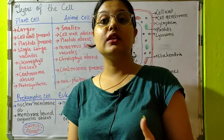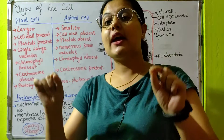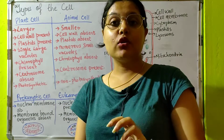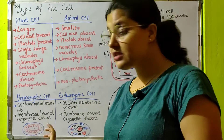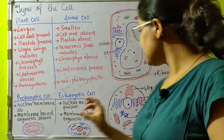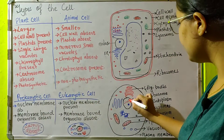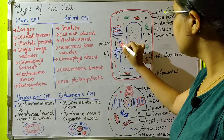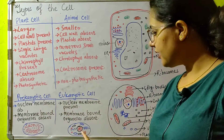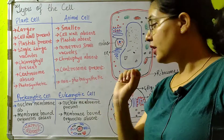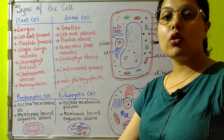We learned about prokaryotic and eukaryotic cells in the nuclear part when we studied the nucleus. When a cell does not have a nuclear membrane, the genetic material present inside the cell is scattered all around the cell. You can see here — the genetic material inside is scattered all around, but in a eukaryotic cell it is concentrated at the center.